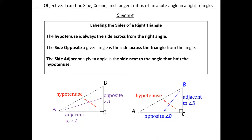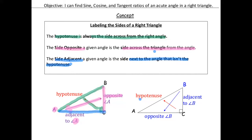Just to review labeling the sides: the hypotenuse is always the side across from the right angle. The opposite side is the side across from the angle of reference — so if angle A is here, the side directly across from it is the opposite side. The adjacent side is the side next to the angle that's not the hypotenuse. So the adjacent side is right next to angle A, but is not the hypotenuse.